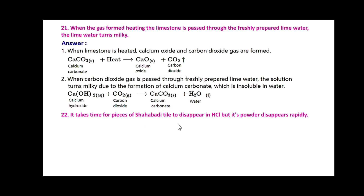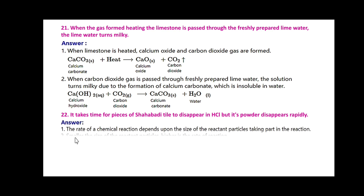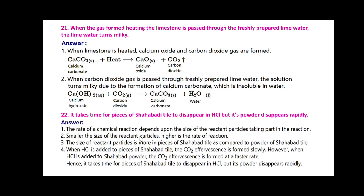It takes time for a piece of Shahabadi tile to disappear in HCl, but its powder disappears rapidly. The rate of chemical reaction depends upon the size of the reactant particles. Smaller the size of the reactant particle, higher is the rate of reaction. The size of reactant particles is more in pieces of Shahabadi tile. When HCl is added to pieces of Shahabadi tile, CO2 effervescence is formed slowly. However, when HCl is added to Shahabadi powder, CO2 effervescence is formed at a faster rate. Hence, it takes time for pieces to disappear but powder disappears rapidly.